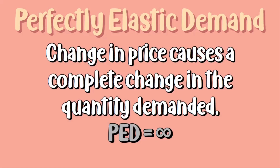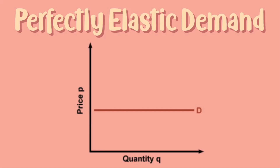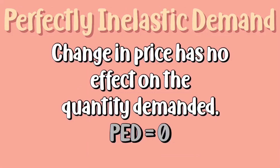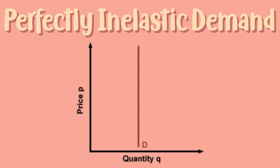Next we have perfectly elastic demand, and it is when a change in price causes a complete change in the quantity demanded. Therefore the PED is infinite. The graph for a perfectly elastic demand is a straight horizontal line. Moving on, we have perfectly inelastic demand, and it is when a change in price has no effect on the quantity demanded. Therefore the PED is 0. The graph for a perfectly inelastic demand is a straight vertical line.